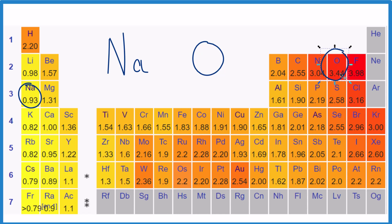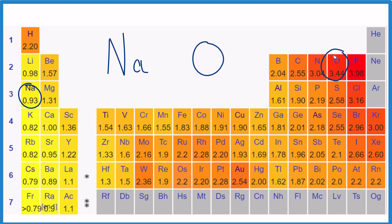The other way is if you do have these values, you can subtract. So 3.44 minus 0.93, that's 2.51.